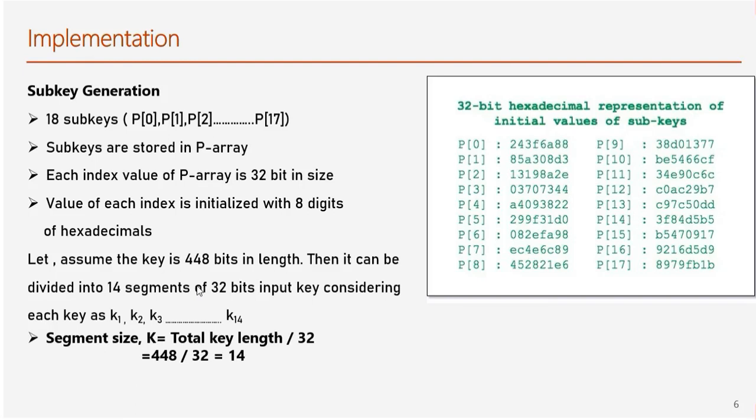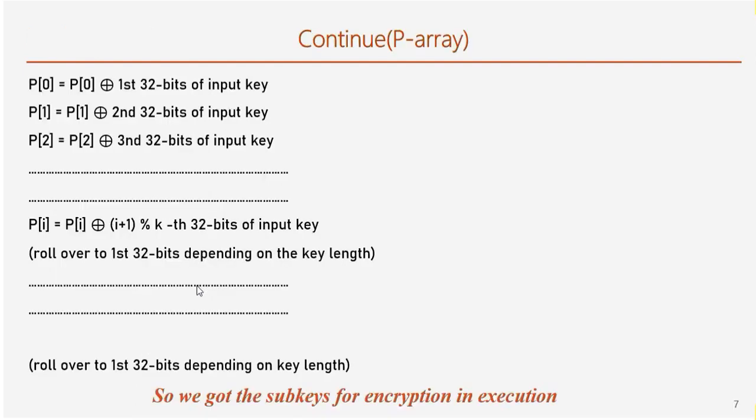Each k-index of P-array contains 32 bits. So we have to divide the key segment into 32 bits. So we can divide the 448 bits as we assume the key length is 448 bits and divide it with 32, and the result of the segment size k is 14. So here we got 14 segments. Initially, P-array are randomized with hexadecimal, but now we have to do some calculation as shown here.